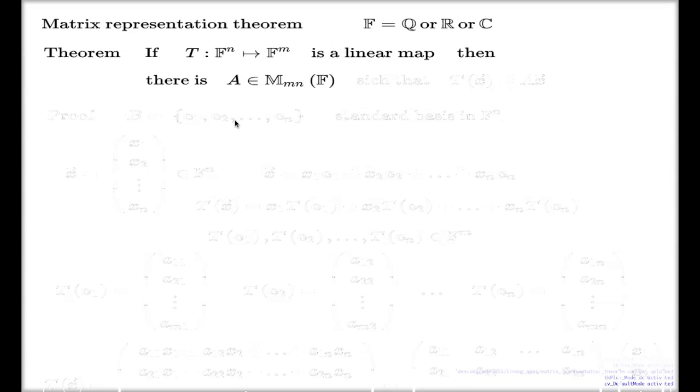So again, I recall for you that F is either of these three number fields. So here's my theorem. It says this: If I have a linear map between n-tuples and m-tuples, it's not every linear map, of course. We have plenty of other linear maps which map different types of vector spaces. But for this particular set of vector spaces, for the n-tuples and m-tuples, the result is straightforward here. If I have a linear map like that, then there will always be a matrix, m columns and rows, such that such a linear map is a matrix-type linear map of the first type.